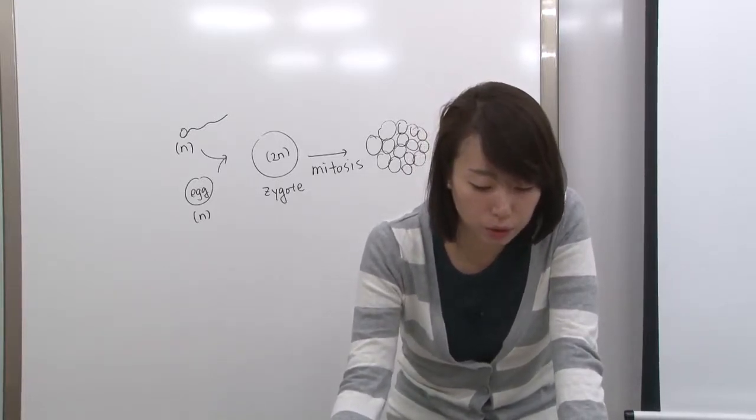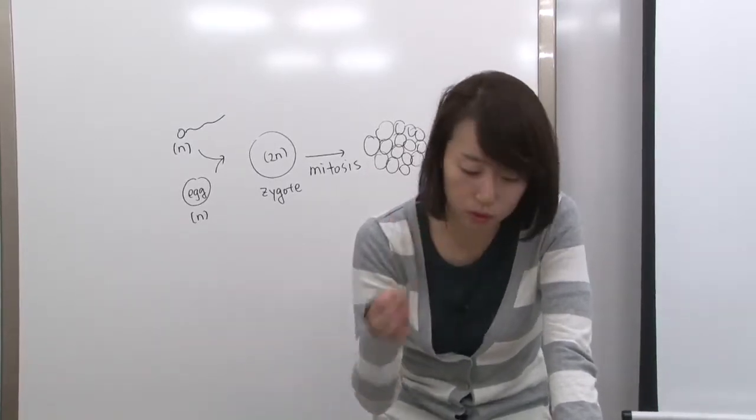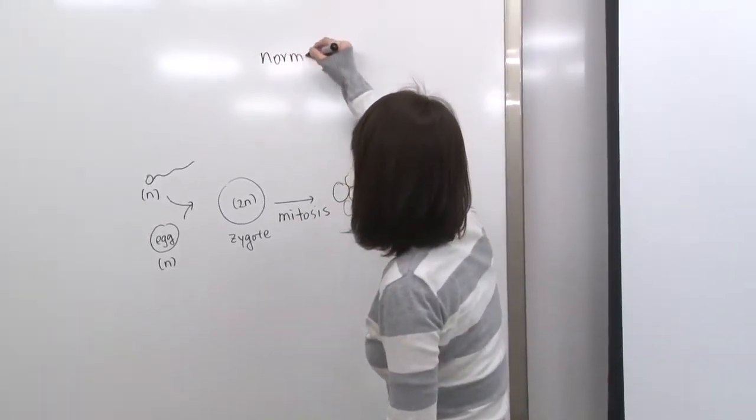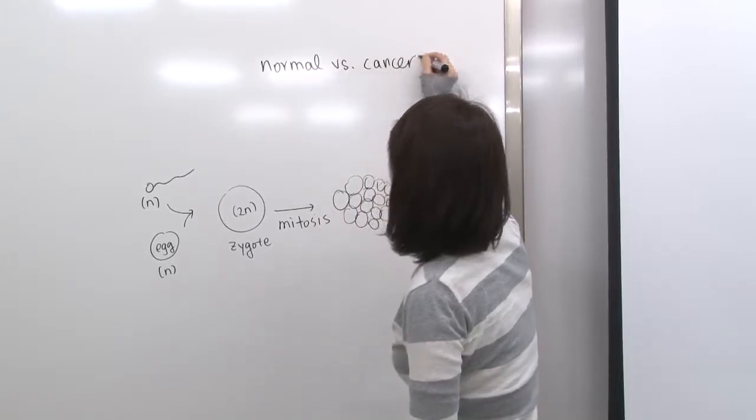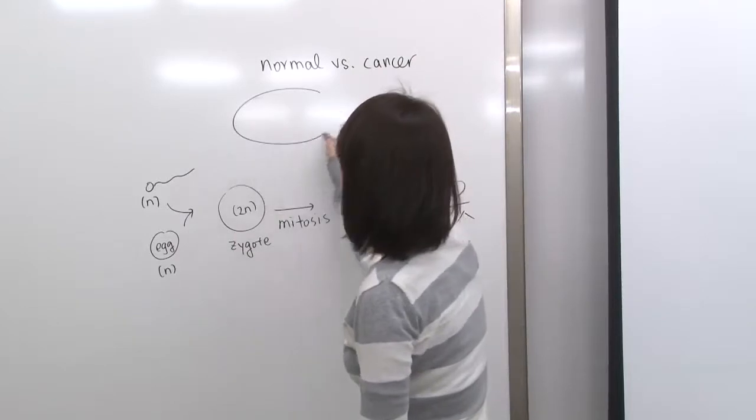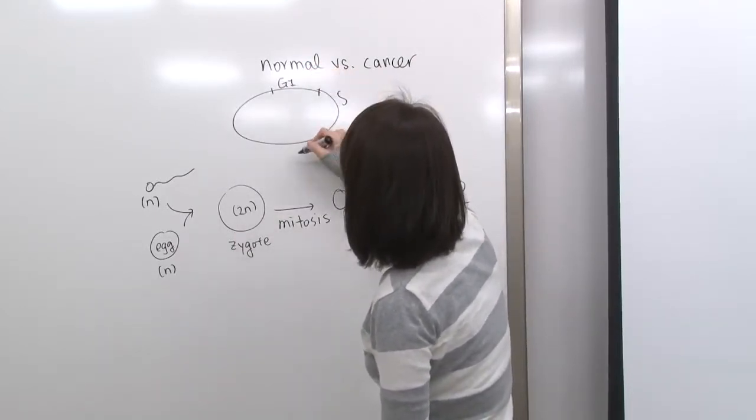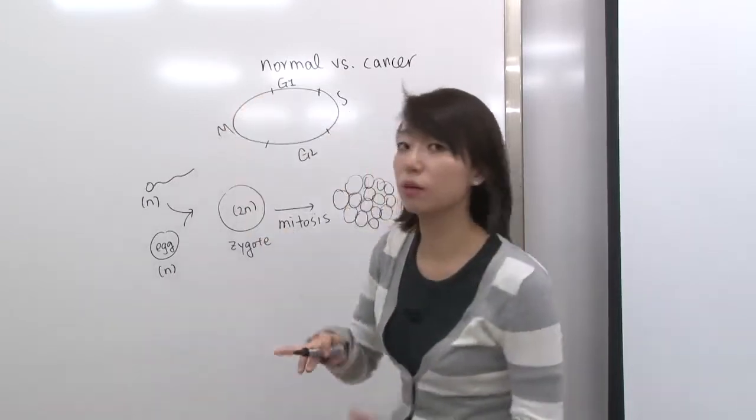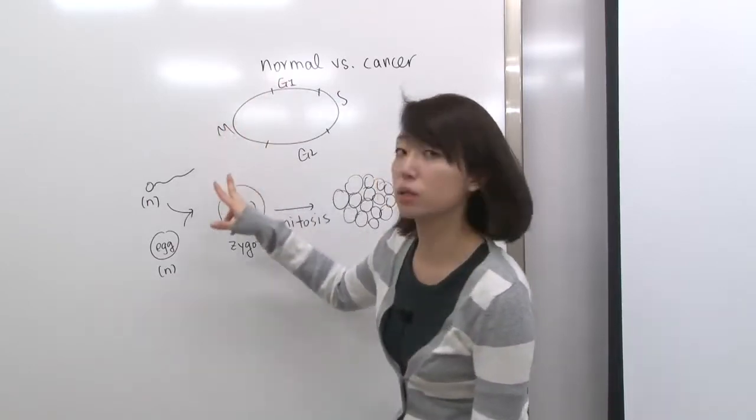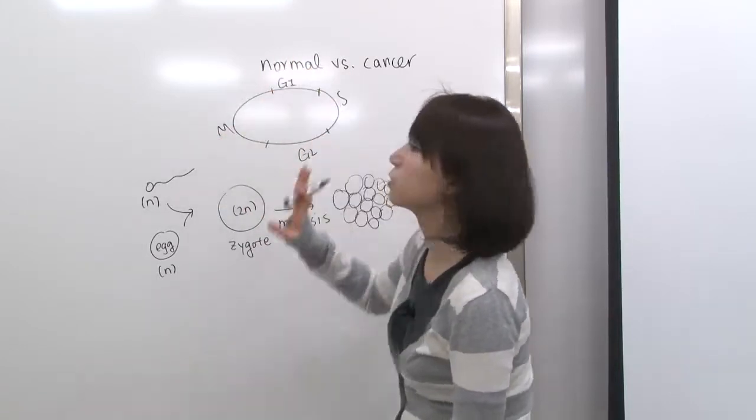Number six, cancerous tumor grows larger. Cancer cell also goes through mitosis. But the difference between the normal cell and the cancer cell is that normal cell actually has the control over the cell cycle. Remember, we have G1, S, G2, and then M phase. So this could be mitosis or meiosis, but for normal body cells, this is mitosis. So actually normal cells can control each of these phases.